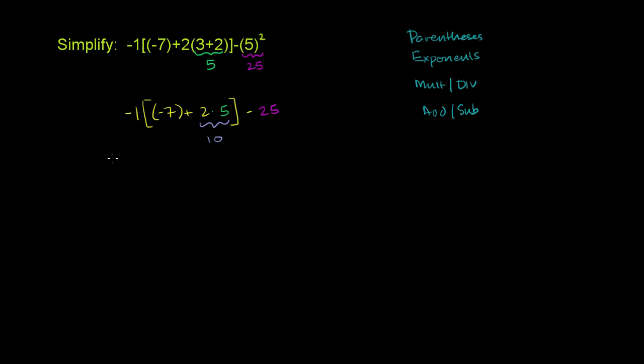So our whole expression becomes, and normally you wouldn't have to rewrite the expression this many times. But we're going to do it this time, just to make sure no one gets confused. So it becomes negative 1 times negative 7 plus 10, and we close our brackets, minus 25.